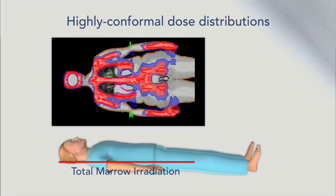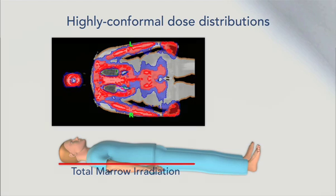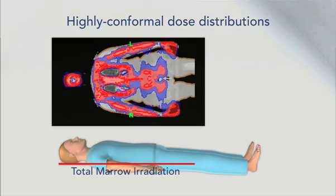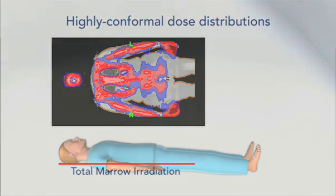With this exquisite dose sculpting, the brain, eyes, thyroid gland, lungs, heart, liver, kidneys, and small bowel are all protected. With TMI, the goal of white blood cell depletion is achieved, but with few gastrointestinal complications. Thank you.